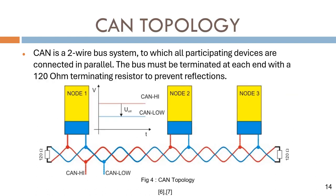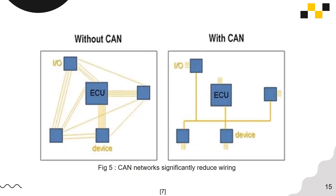The CAN topology is a two-wire bus system to which all participating devices are connected in parallel. The bus must be terminated at each end with a 120-ohm terminating resistor to prevent reflections. Since the devices are connected in parallel, the final resistance will be 60 ohms. The CAN network basically reduces the wiring in a system.